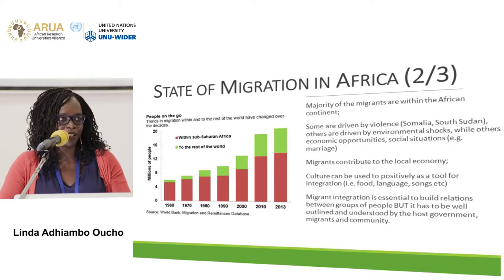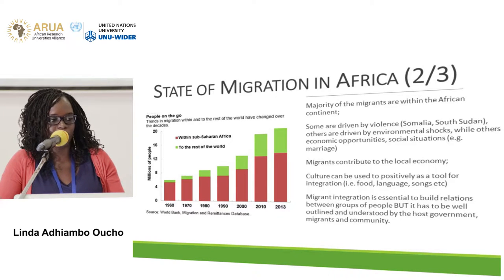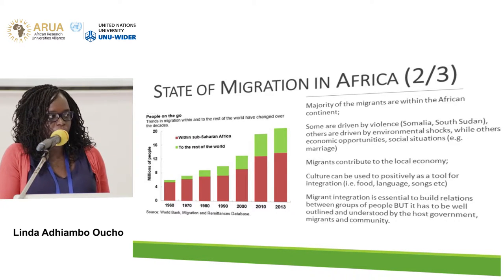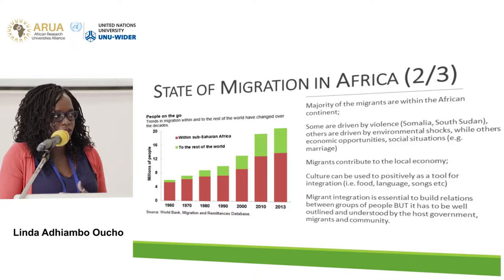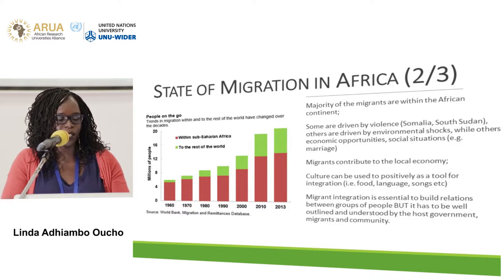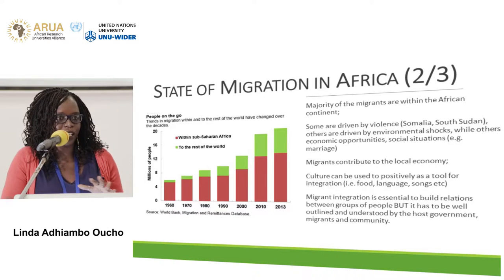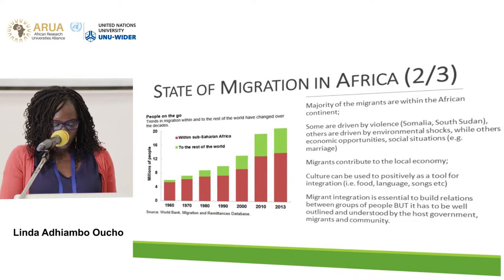We've been hearing about the state of migration and where people go — a lot of migrants are resident on the continent. As you can see from the table based on World Bank statistics on the migration and remittances database, the majority of migrants move within the continent. From 1960 to 2013, the number has increased, but a large population remains on the continent. Most are driven by violence — in Somalia and South Sudan — and environmental shocks like flooding and droughts. Migrants also contribute to the economy, and governments are trying to see how to benefit from working closely with migrants.